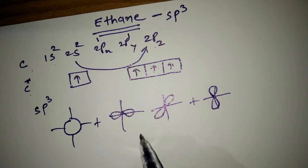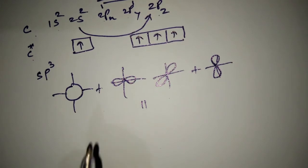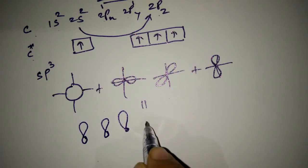After hybridization, we get four identical hybrid orbitals. That is one, two, three, and four.